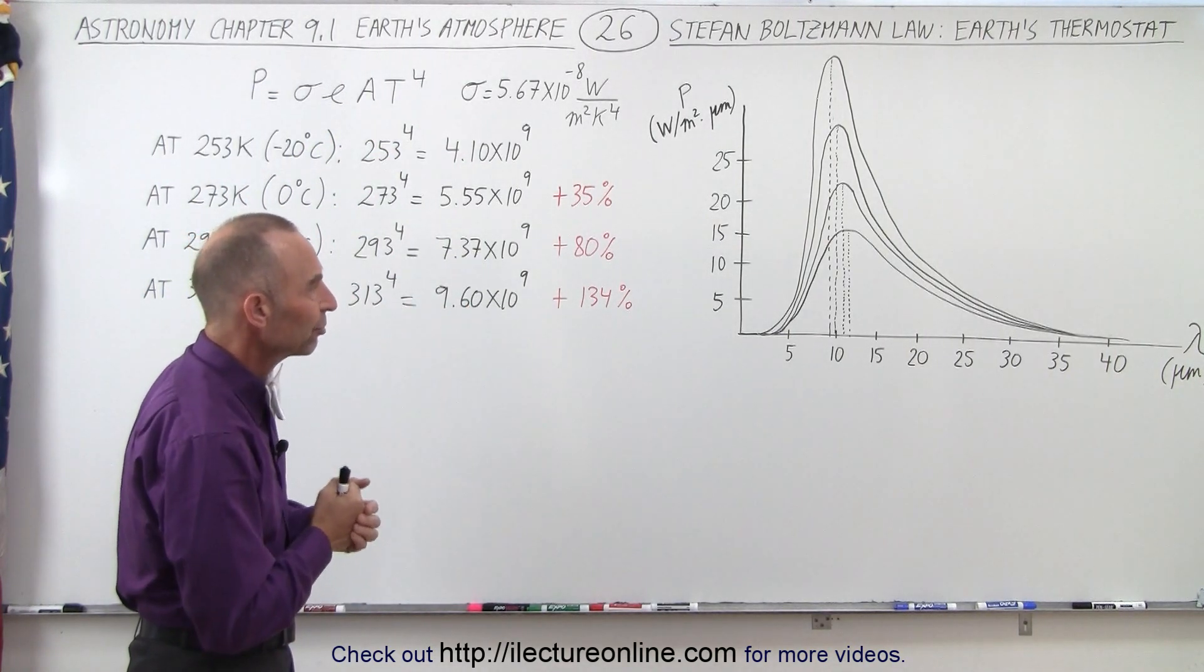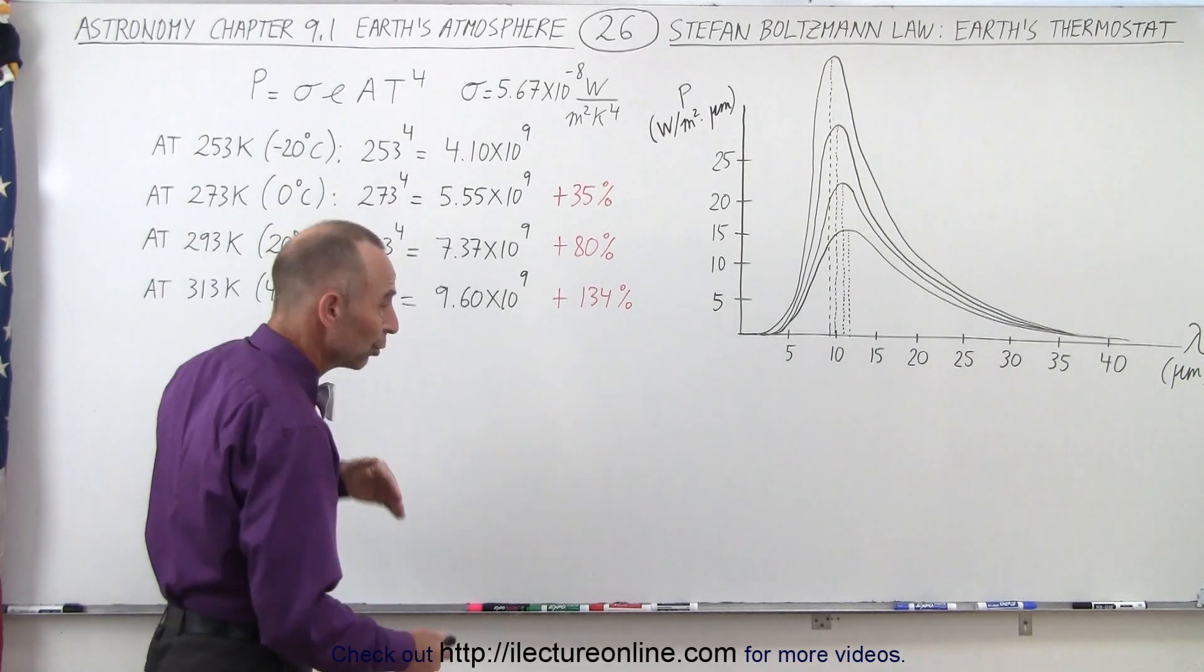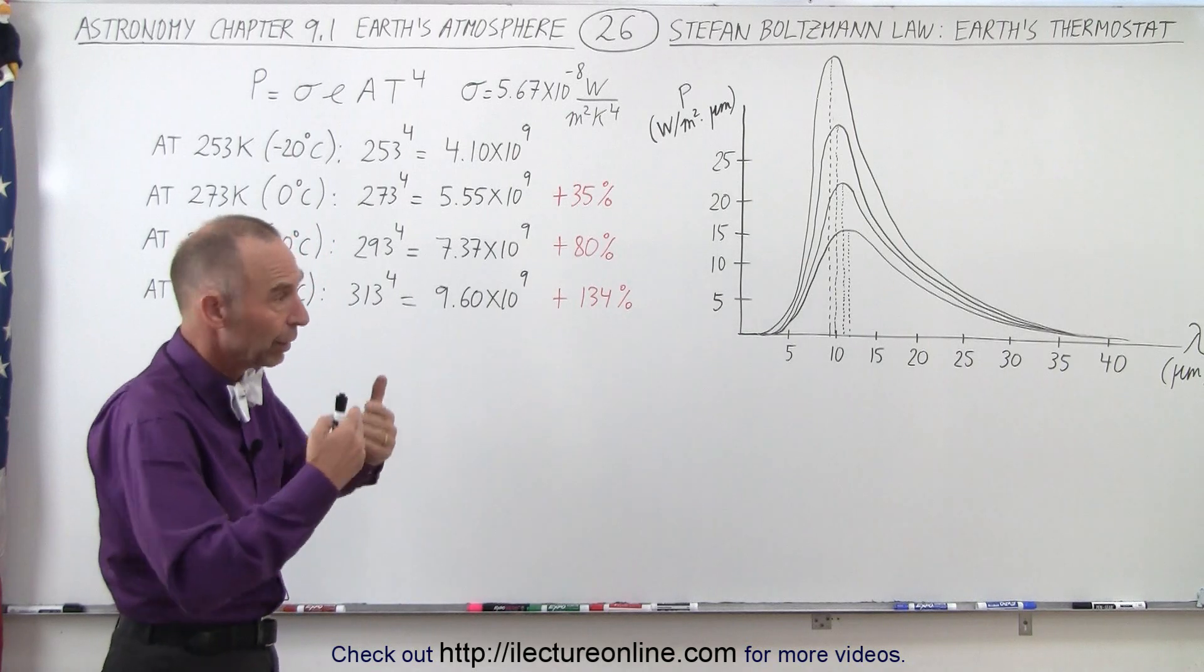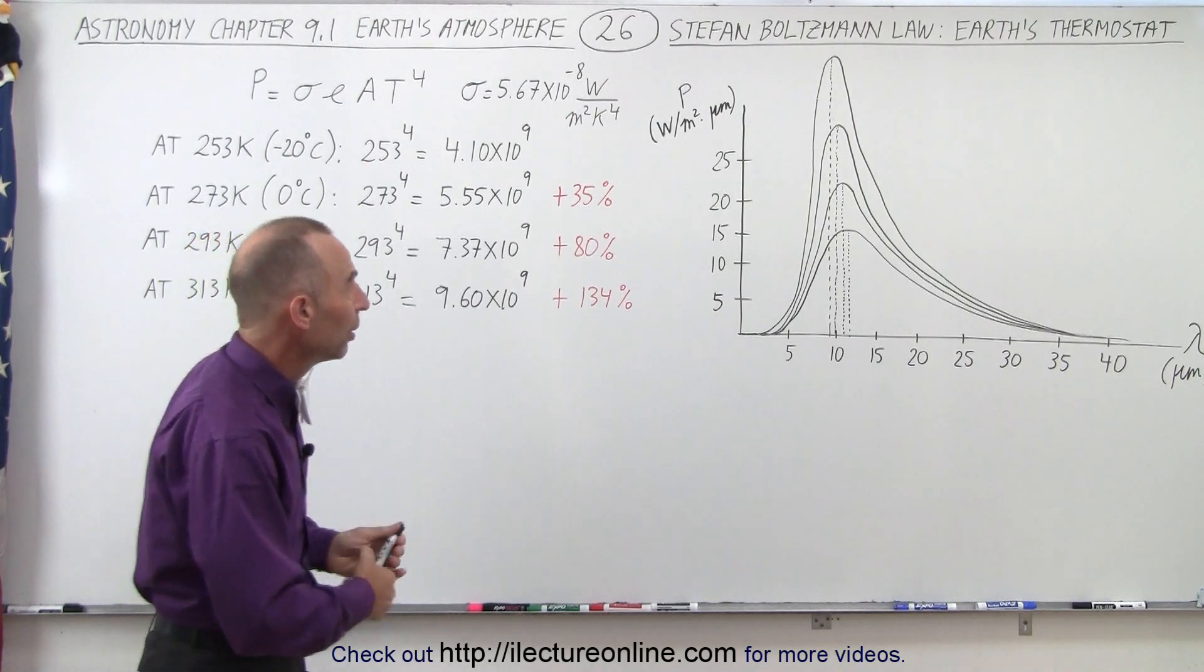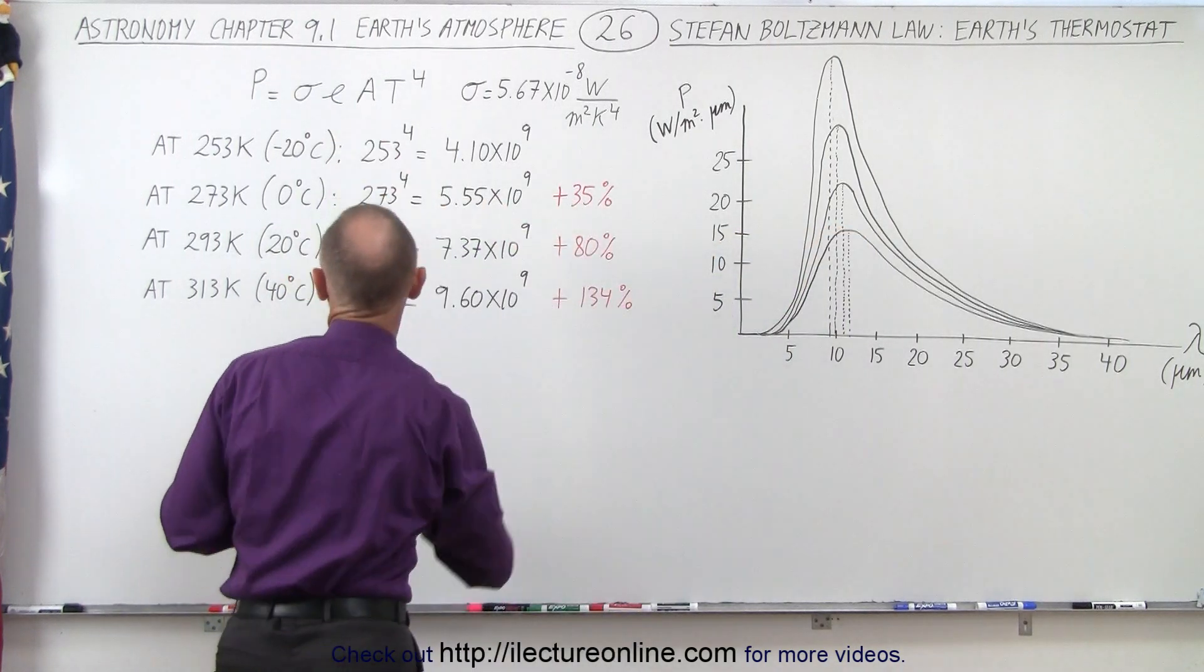Here we kind of have a graphical picture of that. If the temperature on the Earth is 253 Kelvin, which would appear in the Arctic or in northern regions during the wintertime, notice the amount of energy radiated is quite a bit less than when the temperature increases.